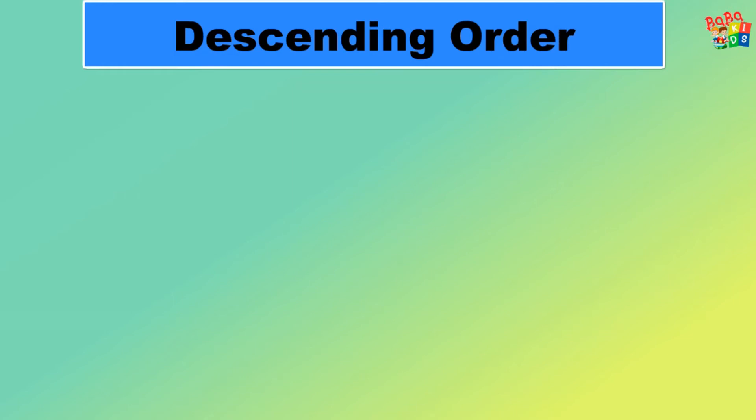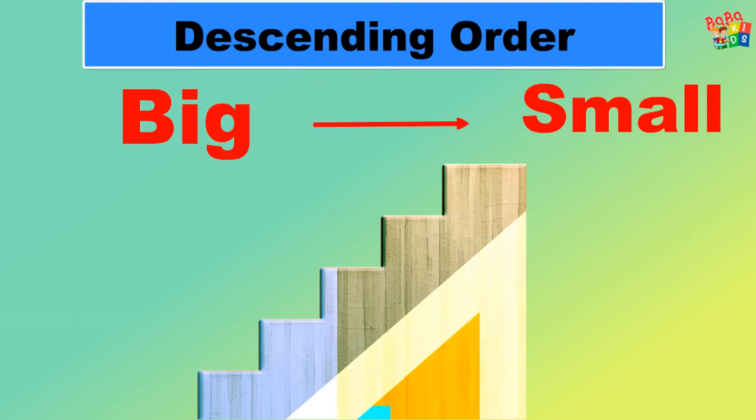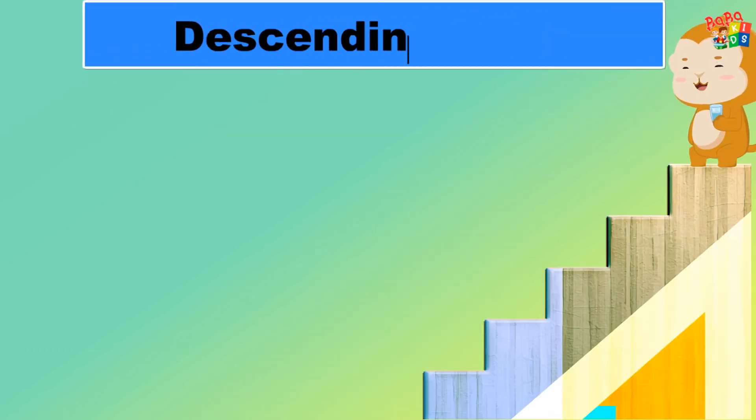Now descending order. Descending order means arranging numbers from big to small, or when we move from upstairs to downstairs, it is called descending order. Now children, after eating burger, Mr. Chiku wants to go back home.